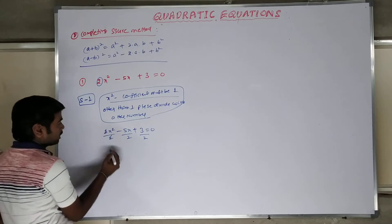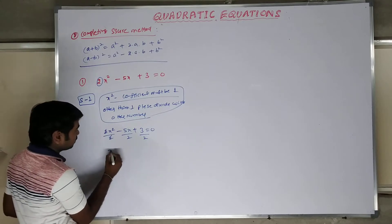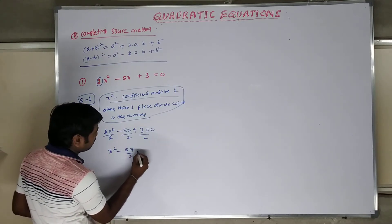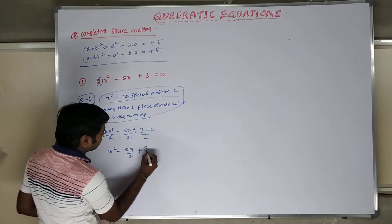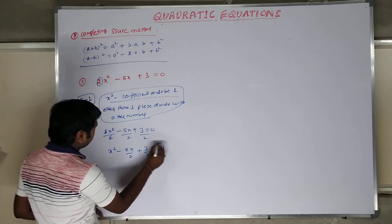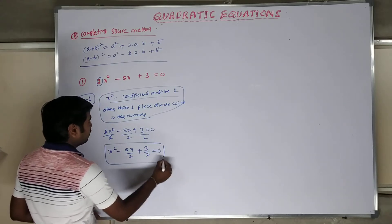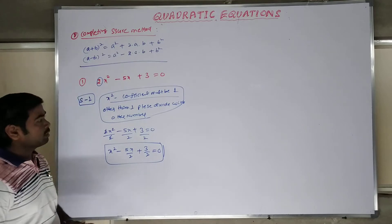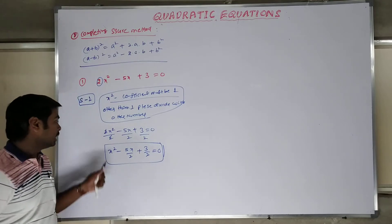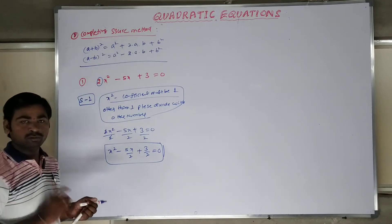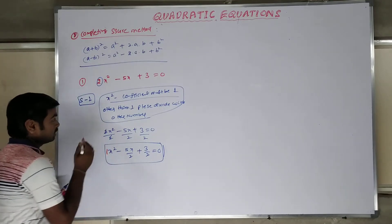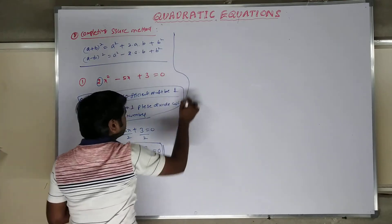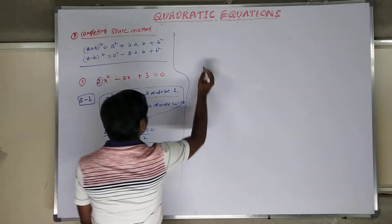After dividing by 2, the 2 cancels with x squared, giving us the new equation: x squared minus 5x/2 plus 3/2 equals 0. This is the new equation, now ready to apply our method. The x squared coefficient is now 1.